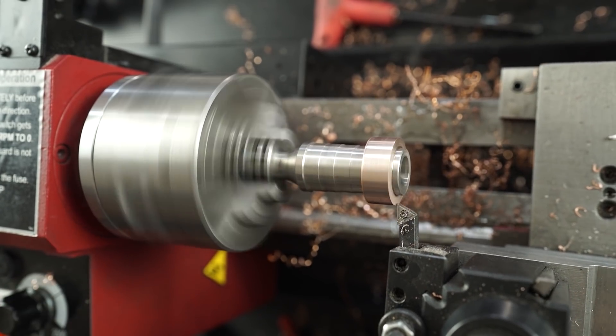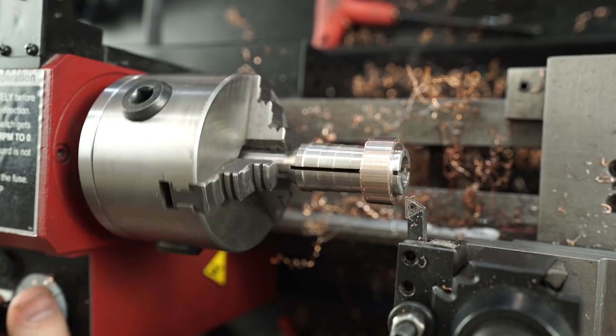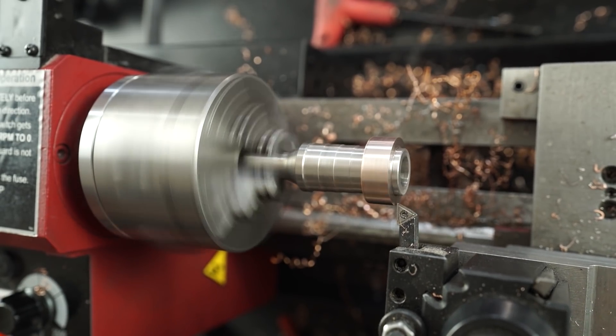Now I'm using my lathe bit to even out the edges of the ring and make sure that both of the sides are perfectly parallel to each other.